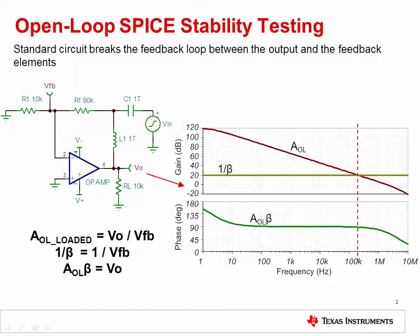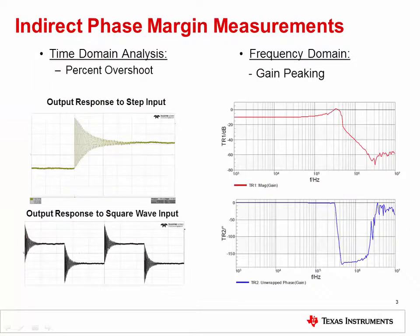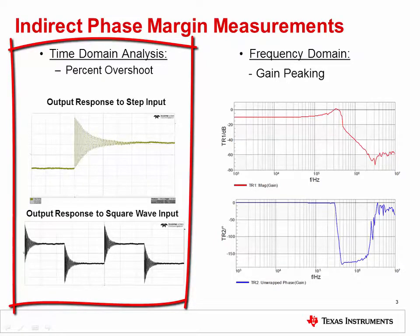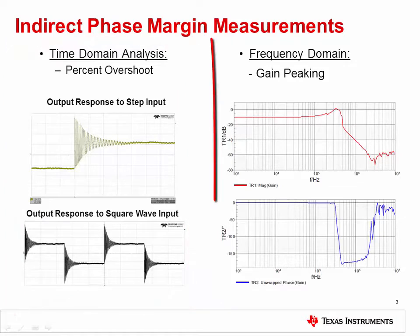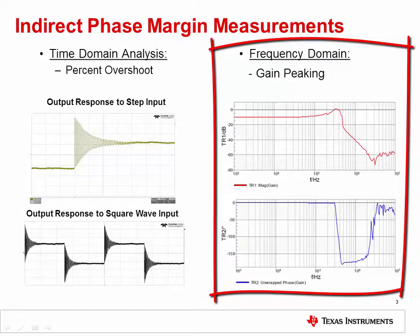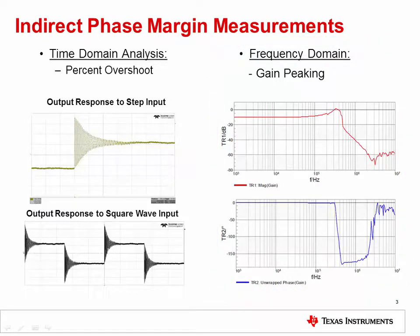While the phase margin and rate of closure measurements discussed in the previous video are possible in SPICE, it is rarely practical to make open loop measurements while testing circuits in the lab. Luckily, there are two easy-to-run tests that can be used to indirectly measure the phase margin of a circuit. The first is to measure the output percent overshoot in response to a step or square wave input — this test can be run using a standard lab function generator and oscilloscope. The second test is to measure the gain peaking in the AC frequency domain, which generally requires a gain phase analyzer.